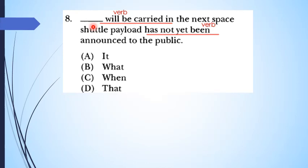Yang bisa menjadi konektor itu dari pilihan A, B, C, D jelas ya, adalah pilihan B dan D. Yang paling salah di sini adalah pilihan A karena dia hanya berupa subjek saja. Yang kedua, what, when, and that. When itu bisa saja berupa sebuah konektor, tapi when di sini adalah pilihan yang kurang tepat. Kita punya dua pilihan di sini: apakah memilih that will be carried in the next space, atau what will be carried in the next space? Yang perlu kita isi adalah yang konektor.